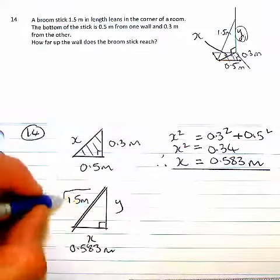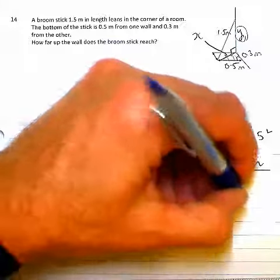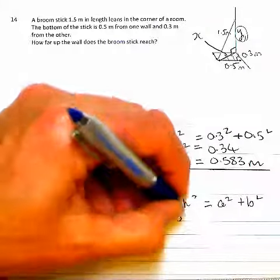Now clearly this is the hypotenuse, so when I write down my formula it becomes 1.5 squared.